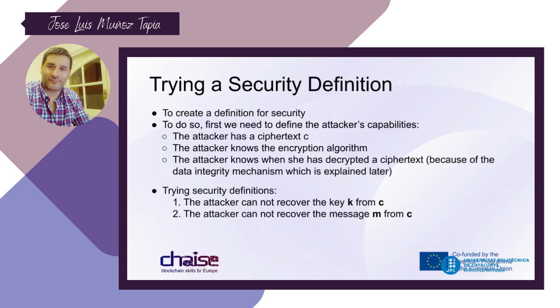Now it's time to ask: how can I be sure that my scheme is secure? What is the definition of a secure symmetric encryption algorithm? To assess the security of an algorithm, we first need to define the attacker's capabilities — what an attacker can do, what they have, and what their goal is. Then we define if our scheme is secure or not.